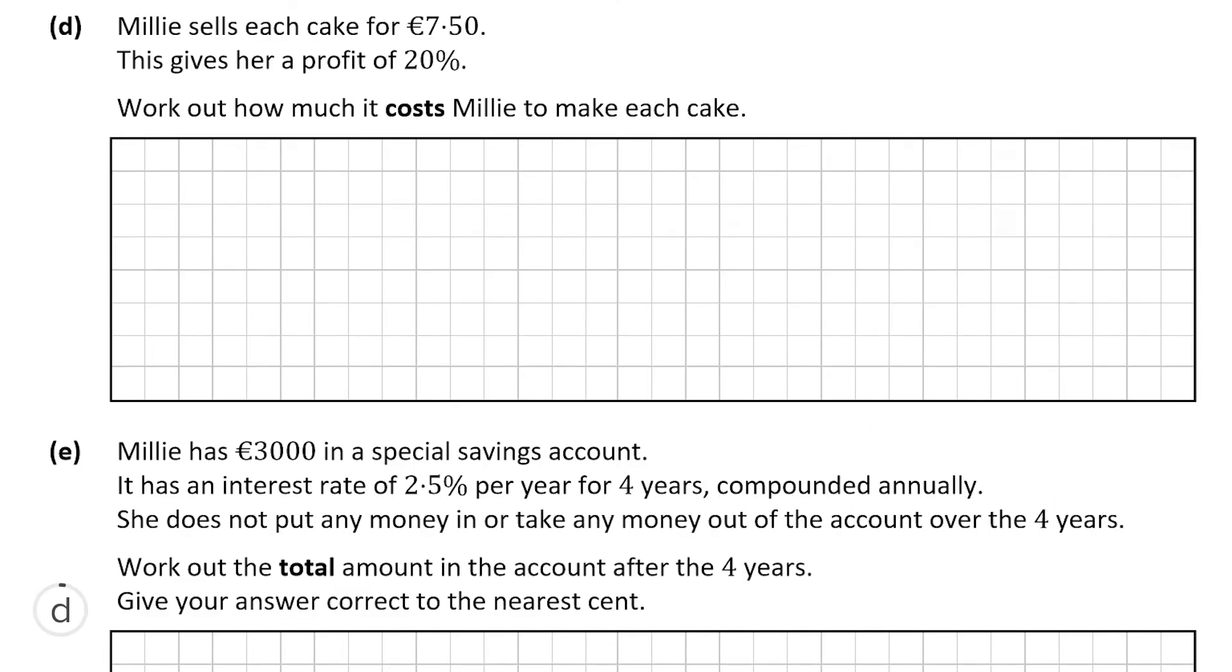Part D tells us that Millie sells each cake for €7.50, and that will give her a profit of 20%. We have to work out how much it costs her to make the cake. Basically what we're saying is that €7.50 is equal to 120% of the cost, as it's 20% added on to the cost. Therefore €7.50 is 120%, and the cost itself will be 100%, and we're trying to work out the cost. We'll say the cost is x. I'm going to cross multiply, so it's €7.50 by 100, and then we're going to divide that by 120. €750 by 100 is €750, and divided by 120, that gives us €6.25. Therefore it costs her €6.25 to make each cake.